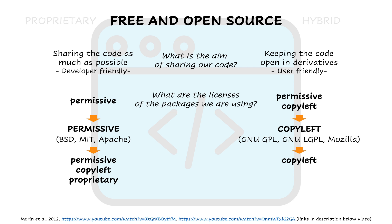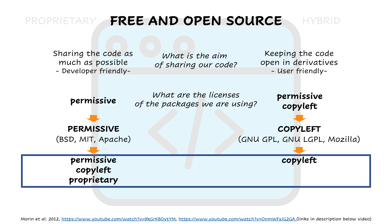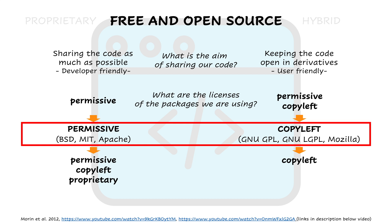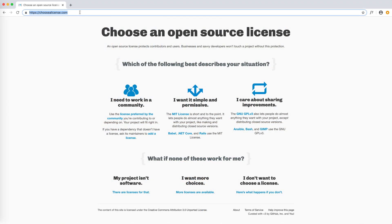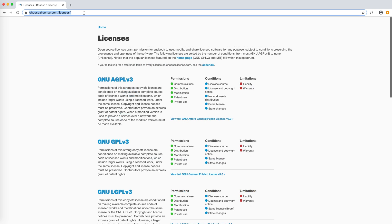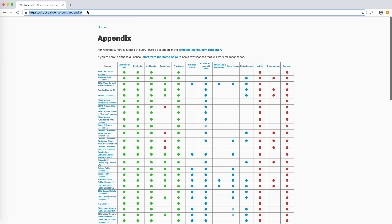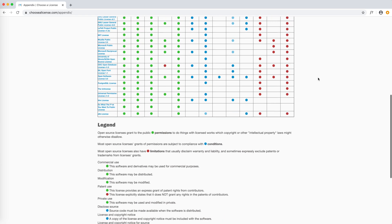In conclusion, when choosing a license we have to keep in mind the aim of our code sharing, backward compatibility of our license, and forward compatibility. Now that we have the tools to decide, how do we choose the license itself? This depends on our own needs and our institutions. A good source of information is choosealicense.com. In the licenses page we can go through details of each license in terms of permissions, conditions, and limitations. In the appendix page we can compare the specific characteristics of each license to choose the best one for our code.